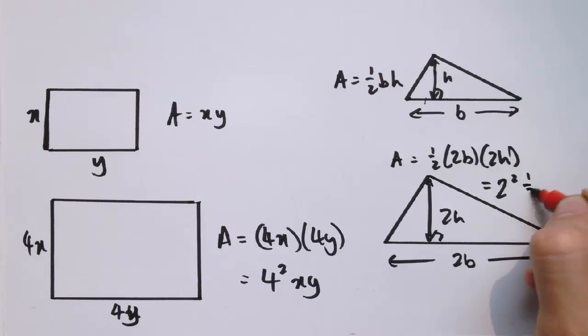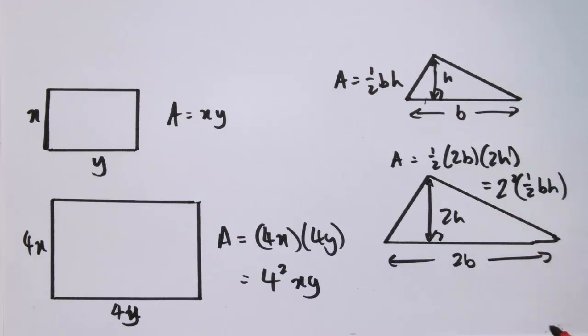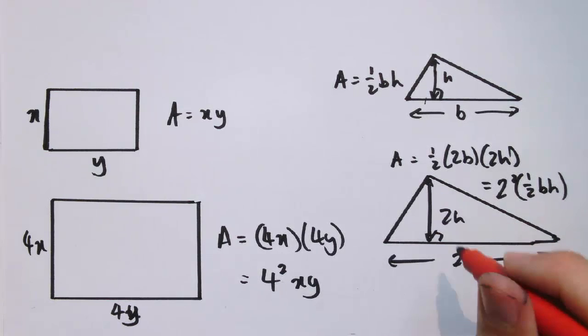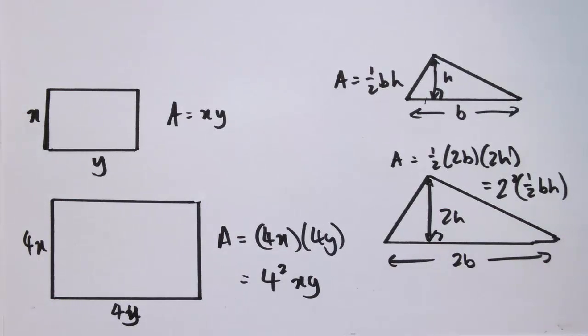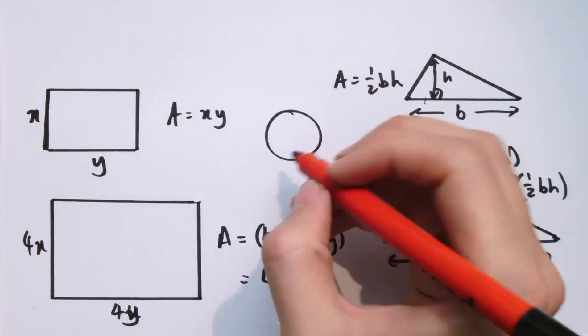Which again would be 2 squared times one half times the base times the height. So the area would be 2 squared times the area of the original triangle. Two-dimensional shapes always have 2 length dimensions in them, so another one we could have is a circle.